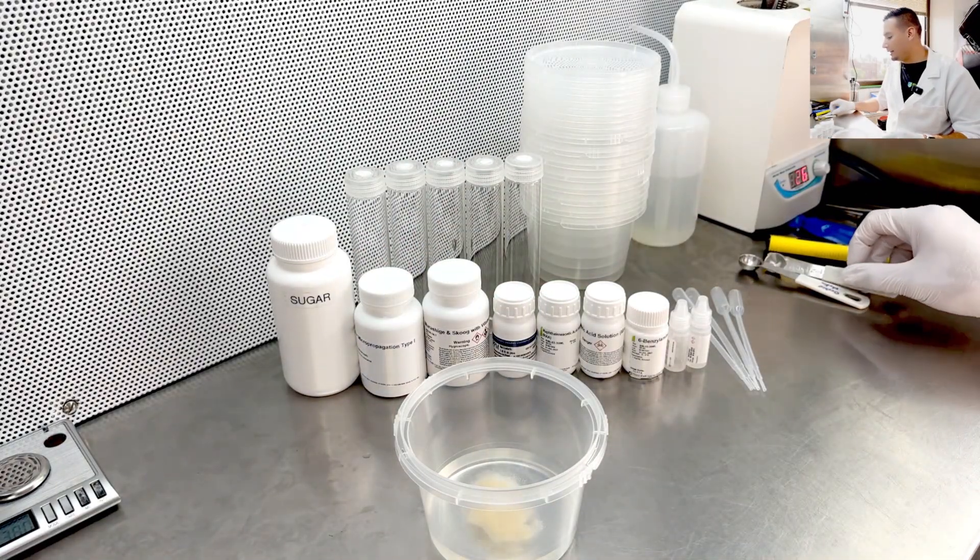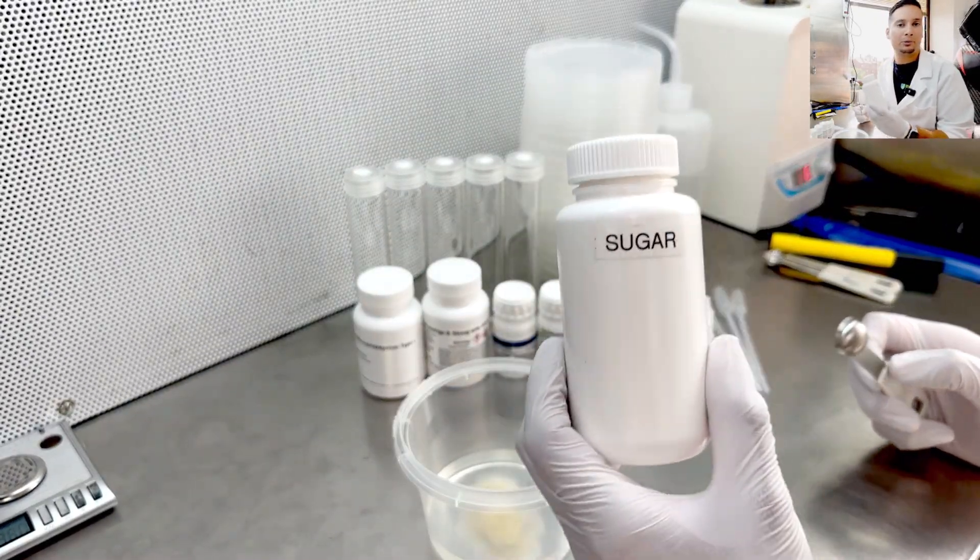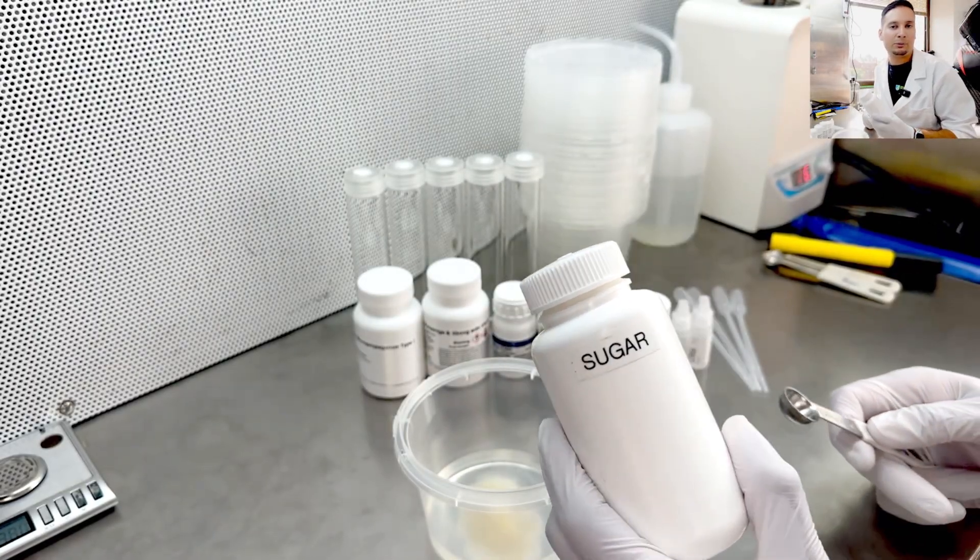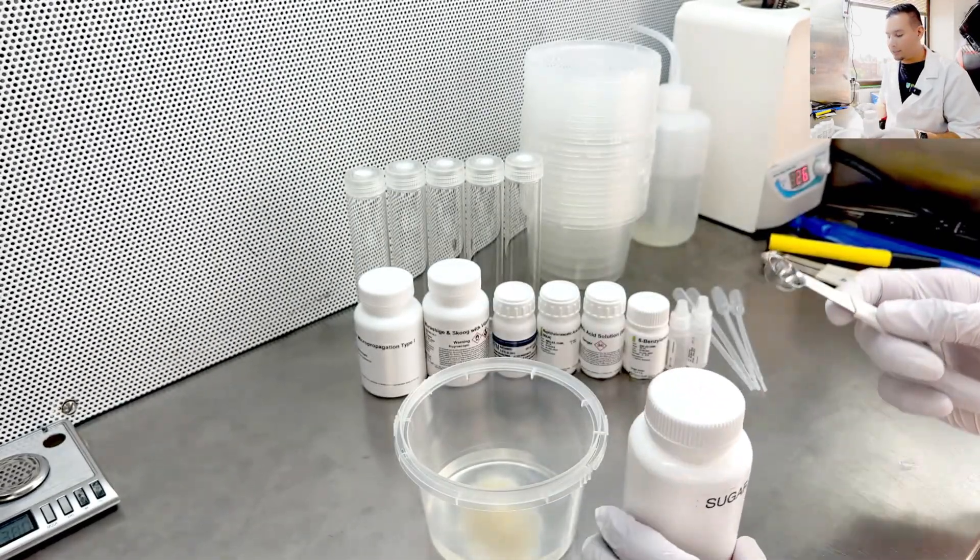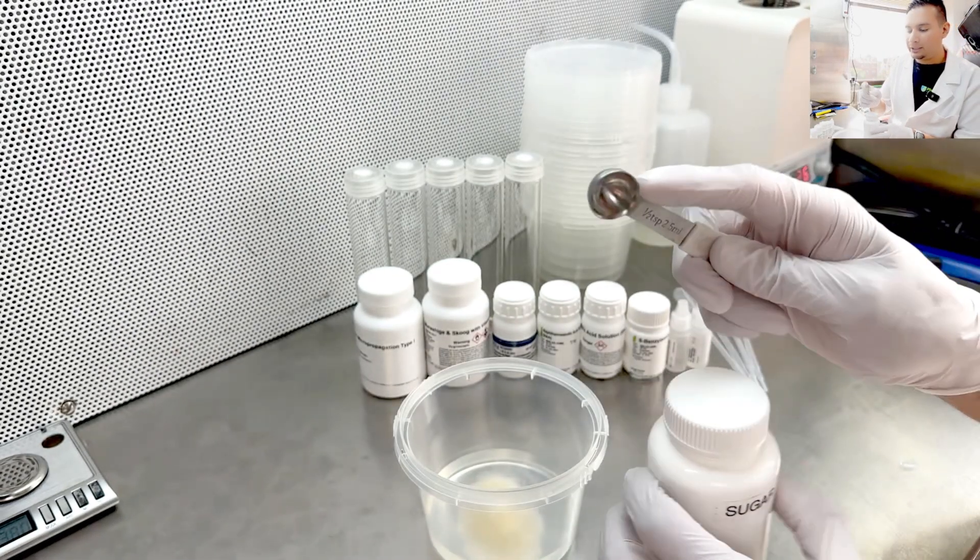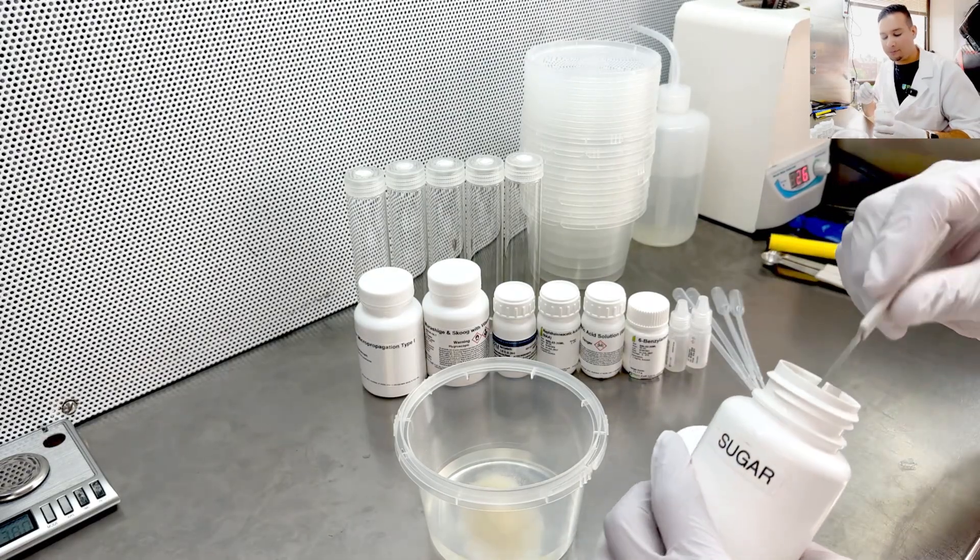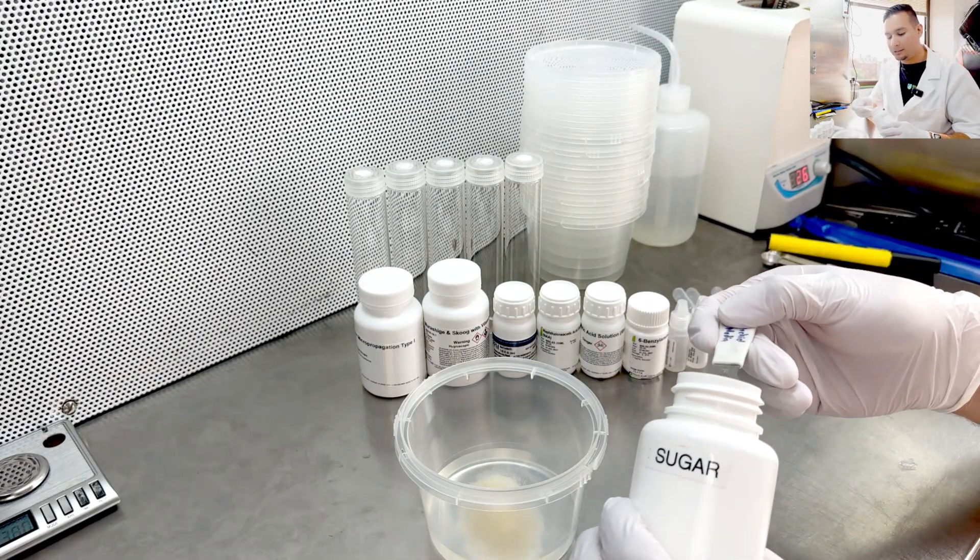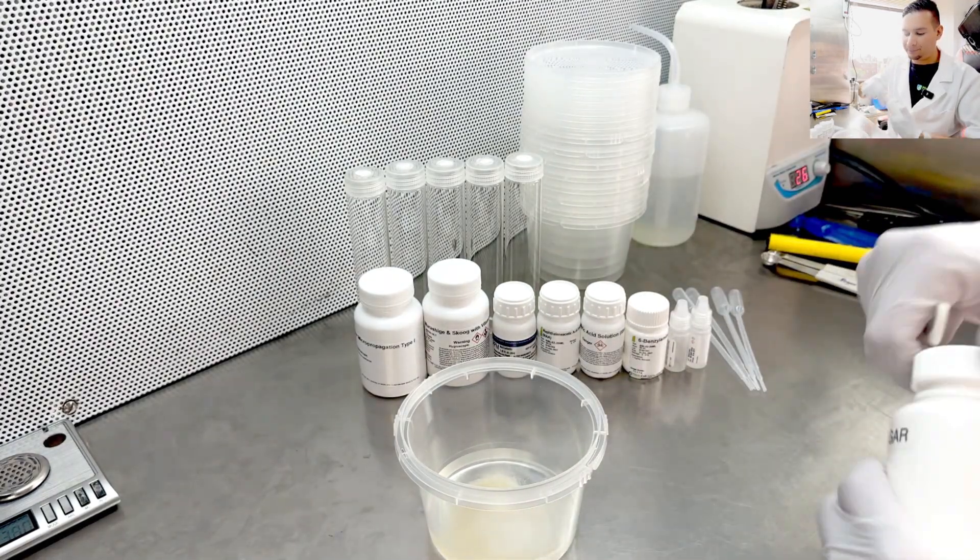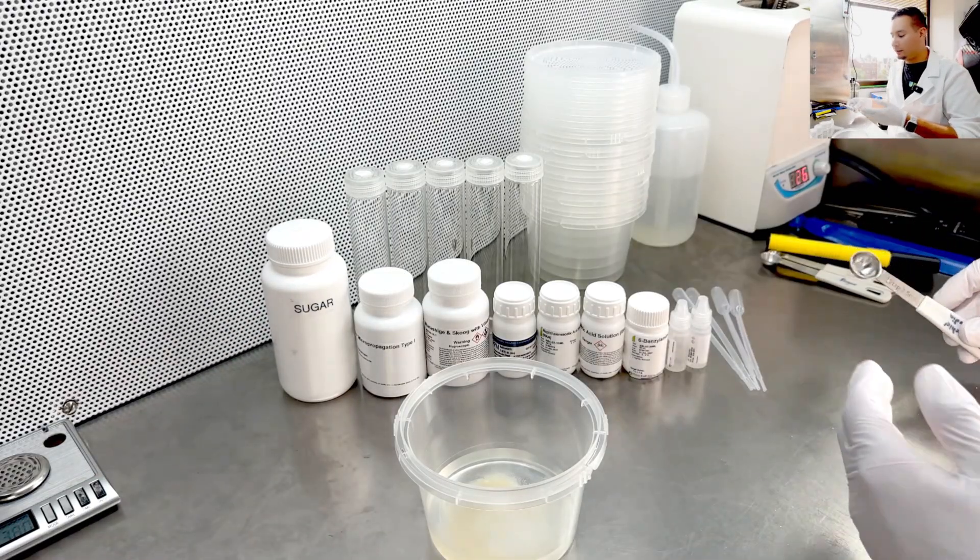Next, I will add the sugar. This is just regular table sugar from the grocery store. For this, most medias use between 20 to 30 grams. If you use a half teaspoon, then that will give you roughly around 20 to 25 grams of sugar. So you have one spoon, and we add that into our media. That's it for all of our solid ingredients.